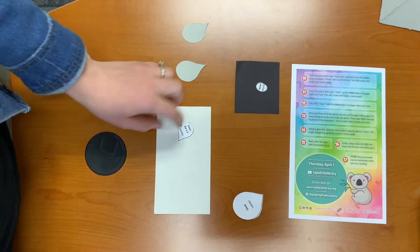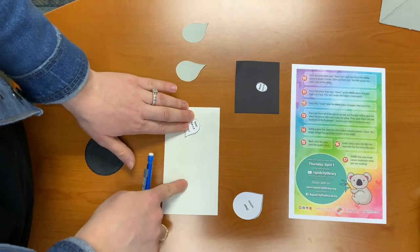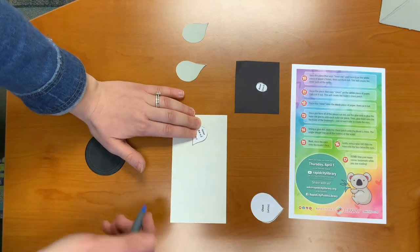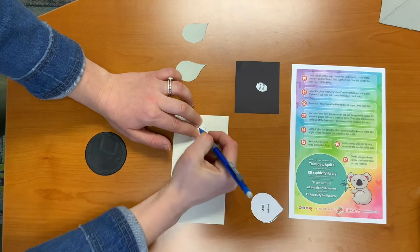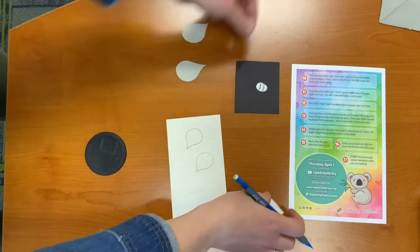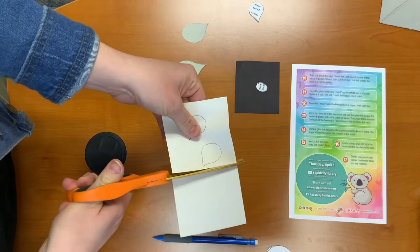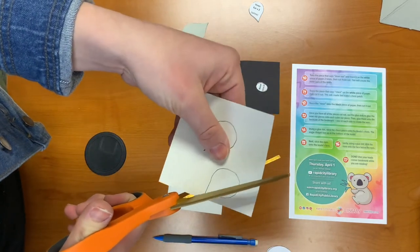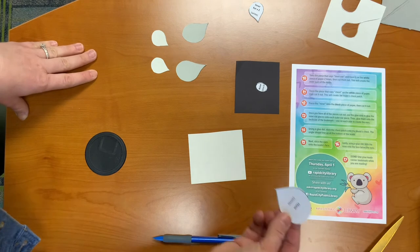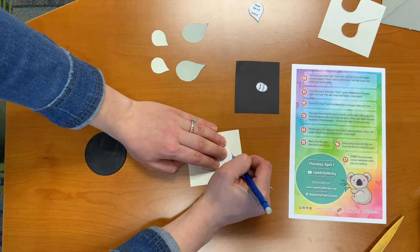Step ten. Take the piece that says inner ear and trace it two times on the white paper and make sure you save a little bit of room because you're also going to cut your chest piece out of this white piece of paper. And then cut them out. Step eleven. Trace the piece that says chest on the white piece of paper and then cut it out. So we're going to trace this.